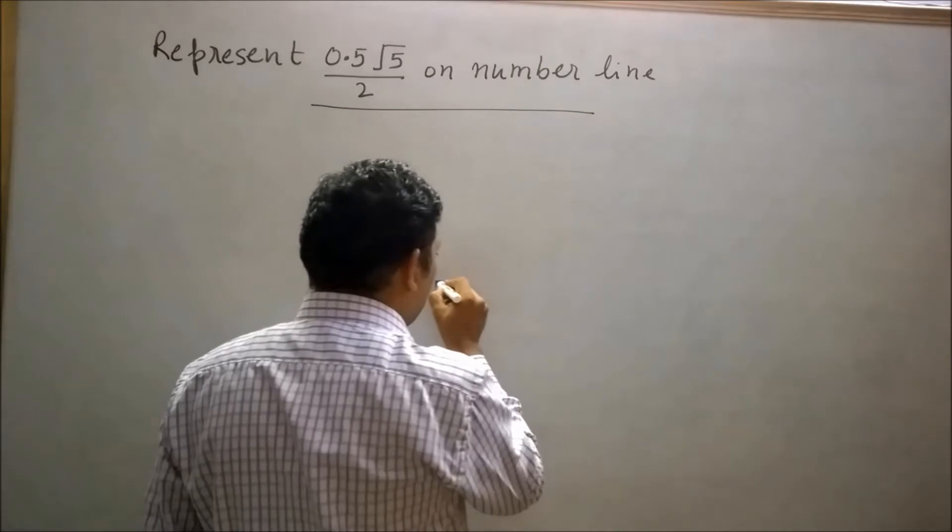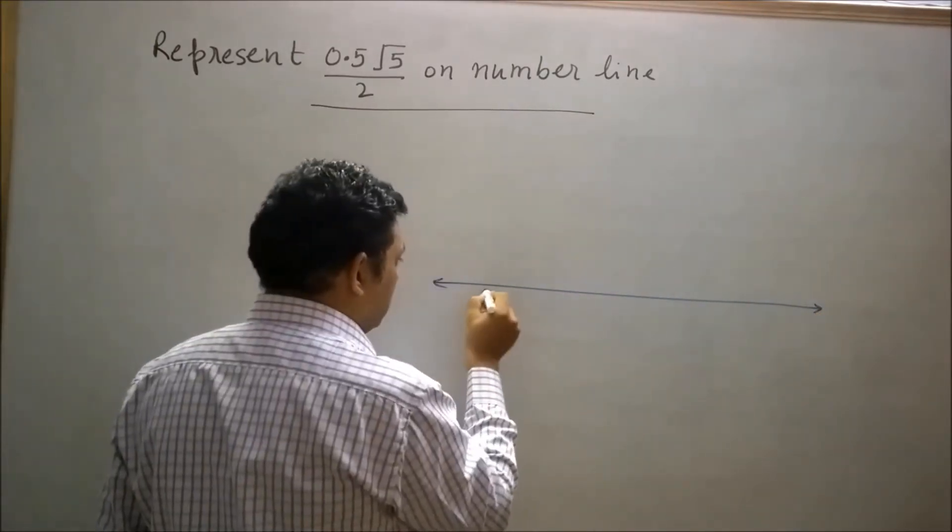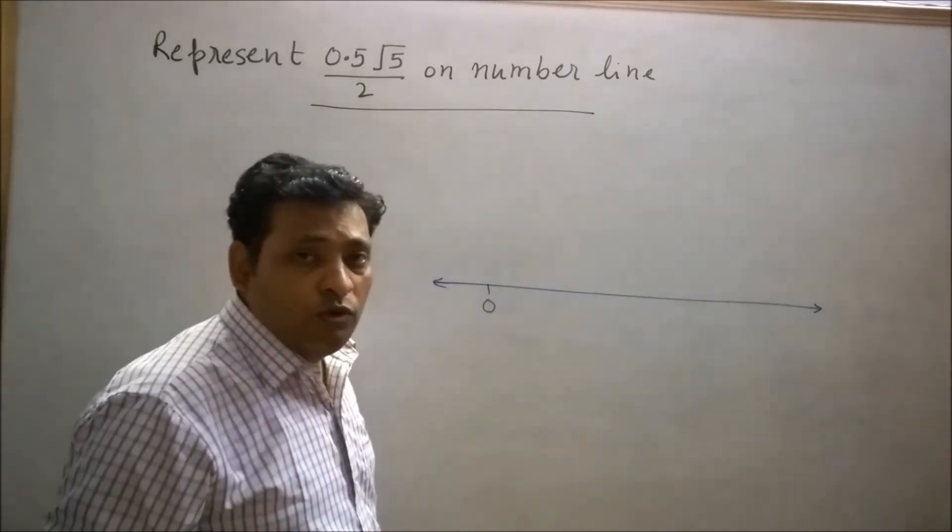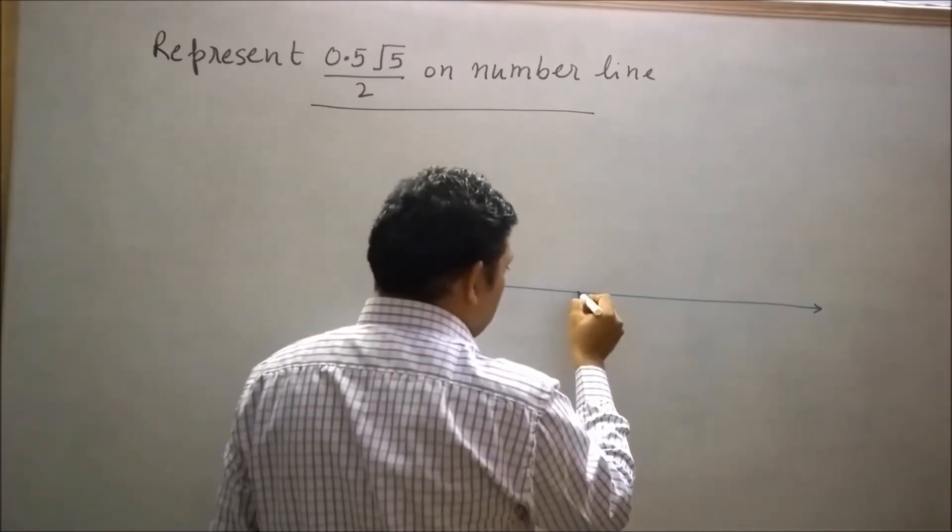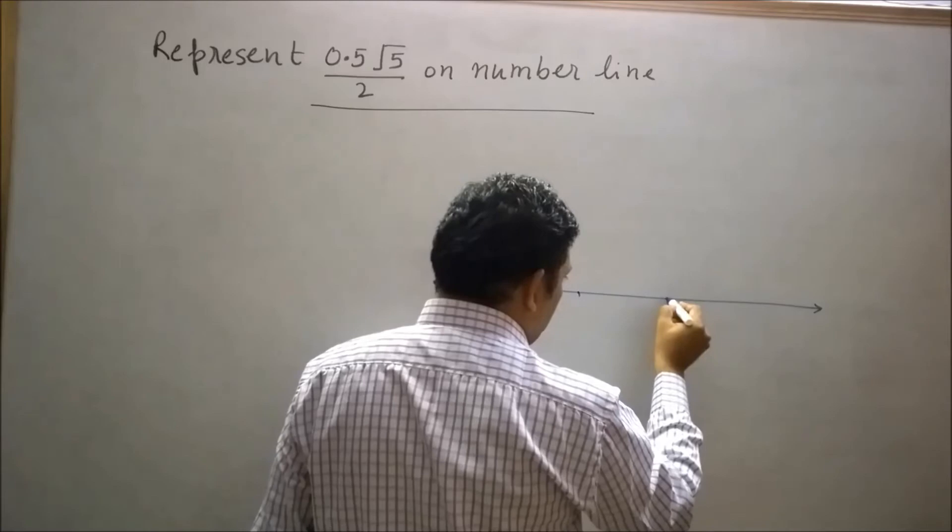First of all, I will draw a number line. Let's say this is our initial point O. Now move 2 unit distance from the right side of initial point O. Let's say this is 1 unit and this is 2 units. Mark this point as A.